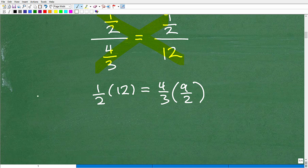That's your justification. Your justification, why or why not, is the work. So let's go ahead and start on the left-hand side. One-half times 12. That's pretty easy. That's six. So now we need to check this side here. Four-thirds times nine-halves.